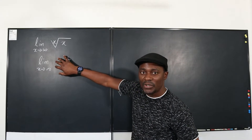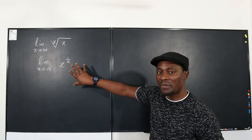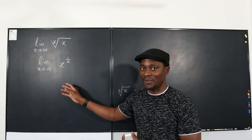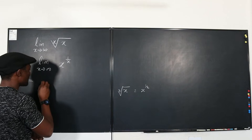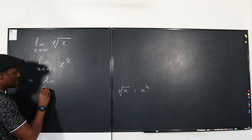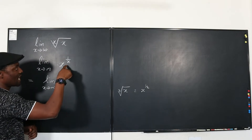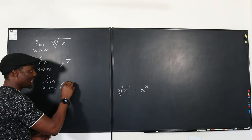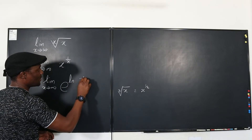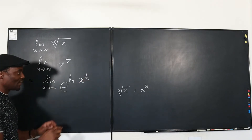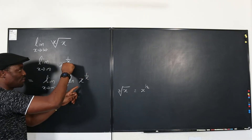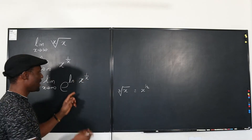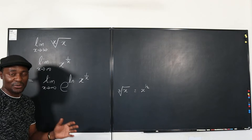Every time there's an exponential function, you want to take the natural log of it, because it makes your life a lot easier. But if you take the natural log, you have to undo it — otherwise you're changing the value of the expression. So we take the natural log and the E of it simultaneously. These two cancel each other out and you still have what you had originally. Take the natural log, take the E of it immediately — this is one of the laws of logarithms and exponential interactions.